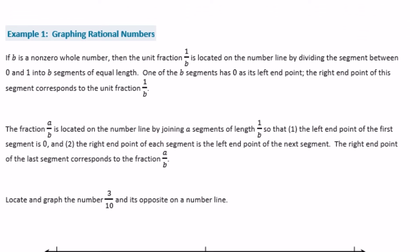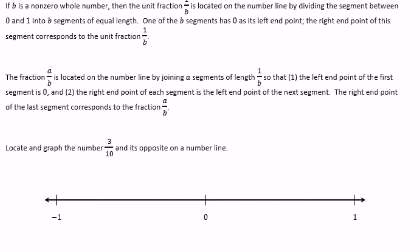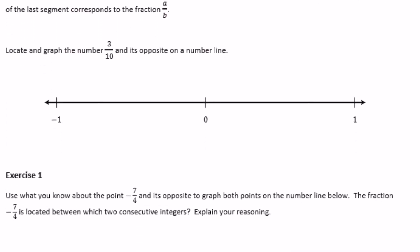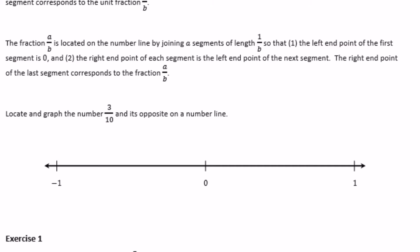Example 1: graphing rational numbers. If B is a nonzero whole number, the unit fraction 1 over B is located on the number line by dividing the segment between 0 and 1 into B equal segments. Basically, this is just talking about how we plot fractions on a number line — let's skip to the example.